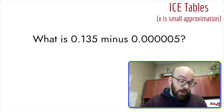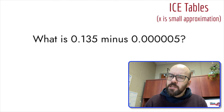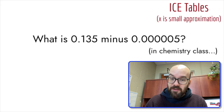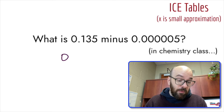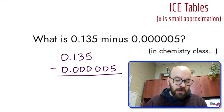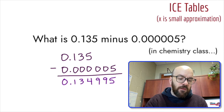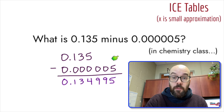We'll do this thought experiment with this question: what is 0.135 minus 0.0000005? And specifically, what's the answer in chemistry class, not in math class? If I set up the subtraction problem — 0.135 minus 0.0000005 — in math class you'd get 0.134995, assuming zeros after the 5 in 0.135.